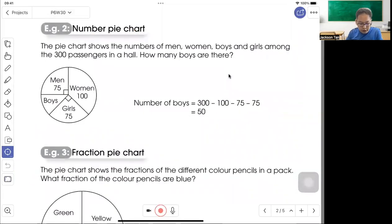So this is the number pie chart. The pie chart shows the number of men, women, boys, and girls among the 300 passengers in a hall. How many boys are there? So 300 minus 100, 75, and 75, you'll get the boys 50.